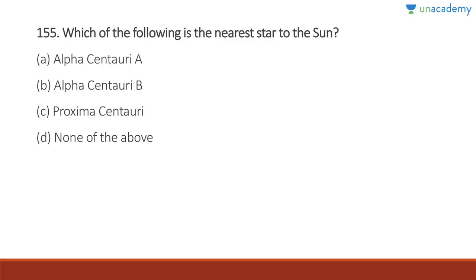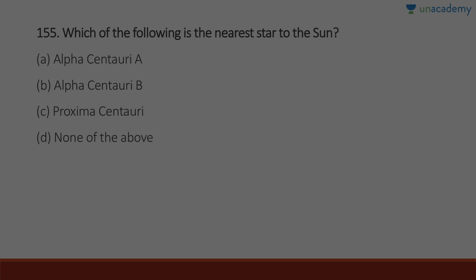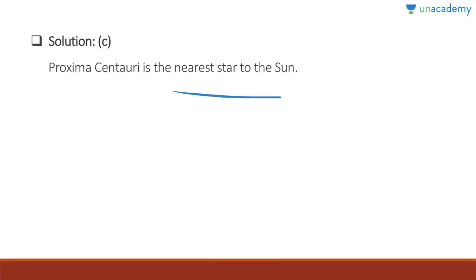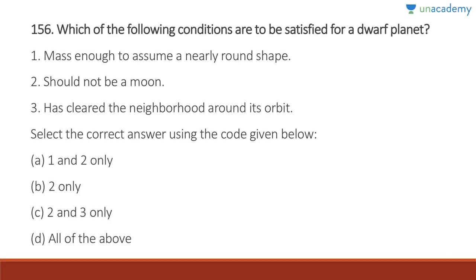Question 155: Which is the nearest star to the sun? Alpha Centauri A, Alpha Centauri B, and Proxima Centauri are all very close to the sun, but Proxima Centauri is the closest among the three. Proxima Centauri is the closest star to the sun.